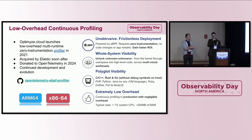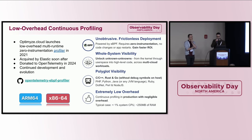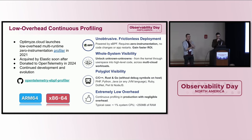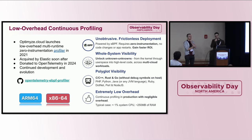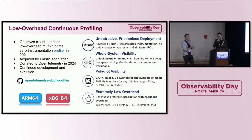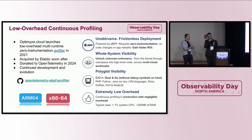Our profiler is based on eBPF, a technology that lets us insert and execute new code into the Linux kernel in a safe manner without having to implement and load a kernel module. The profiler requires no instrumentation and no application restarts of any kind, and it gives us whole-system visibility from the kernel into native code and also code running in higher-level language runtimes. We support most programming languages that compile to native code but also most widely used higher-level languages. We aim for very low CPU and memory overhead — typically less than one percent system CPU and less than 250 megabytes of RAM.